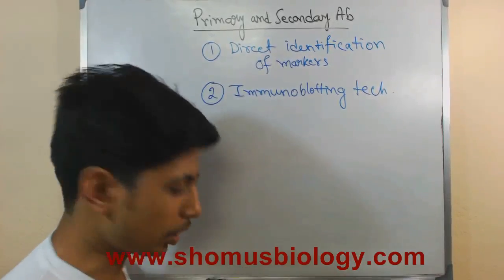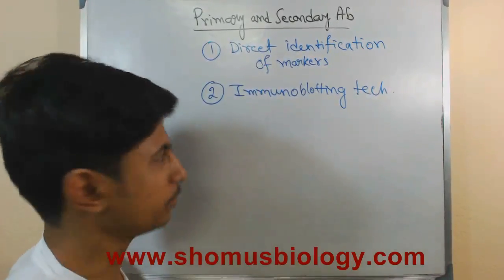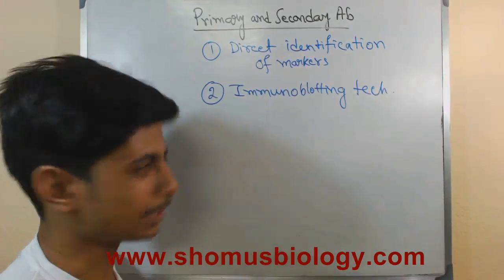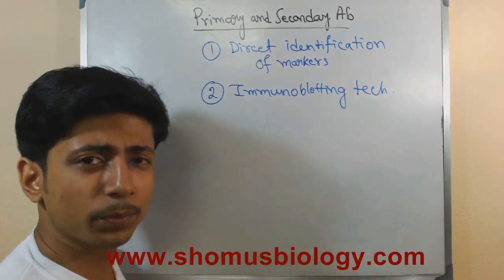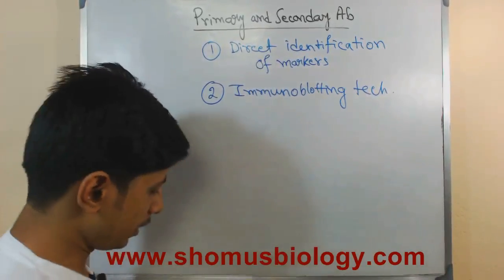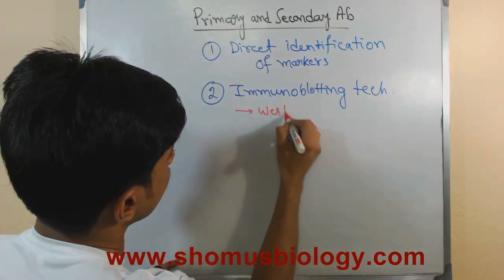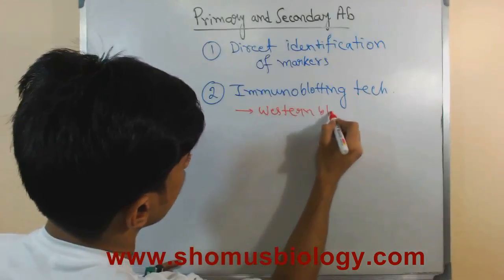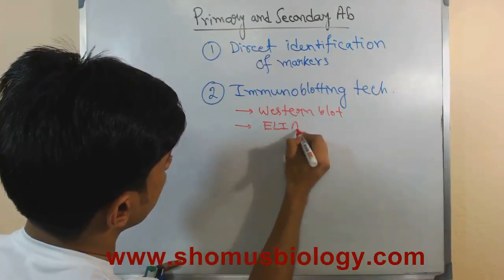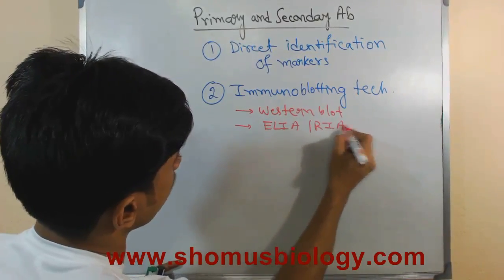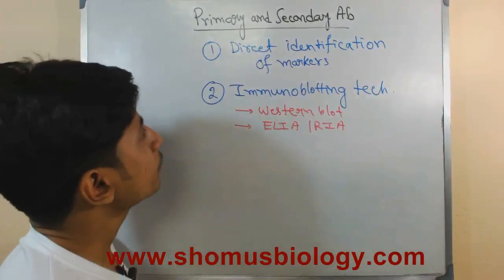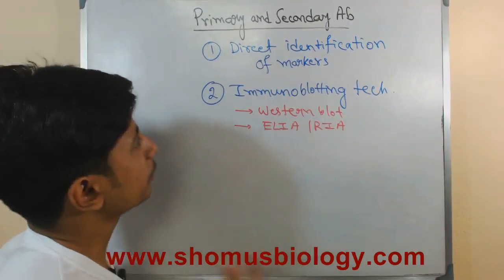In blotting techniques we also use antibodies — that is where the term immunoblotting comes from. Also in protein blotting, which is called western blotting, we use antibodies. Examples of such techniques are western blotting, ELISA (enzyme-linked immunoassay), and radio immunoassay.